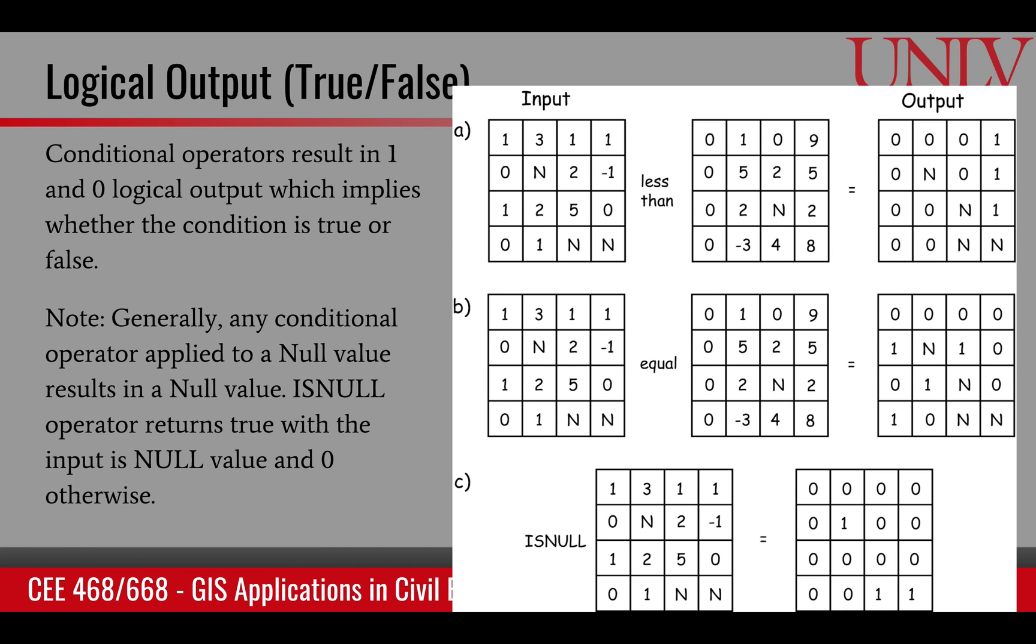The logical output can also be generated from conditional operators. Conditional operators are basically applying some condition on the inputs. For example, conditions can be less than, greater than, equal to. Suppose we have two inputs and our condition is less than. If the condition is true, then a 1 will result. If the condition is false, a 0 will occur. So 1 is less than 0 is false, so 0.